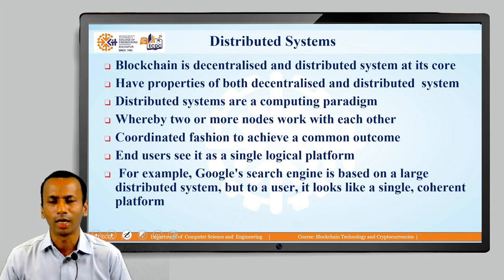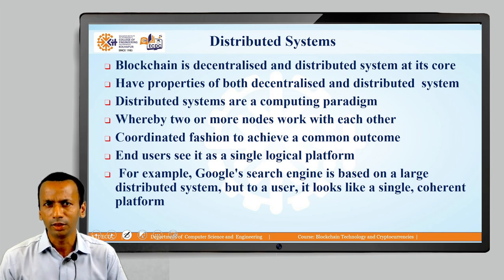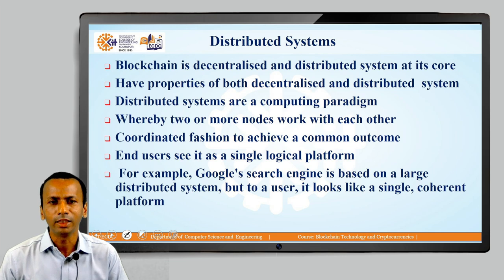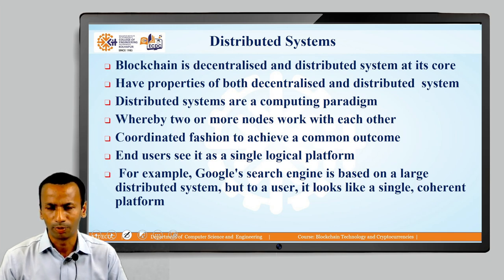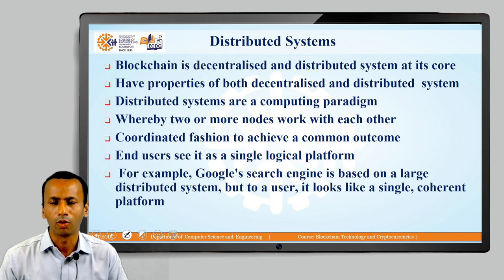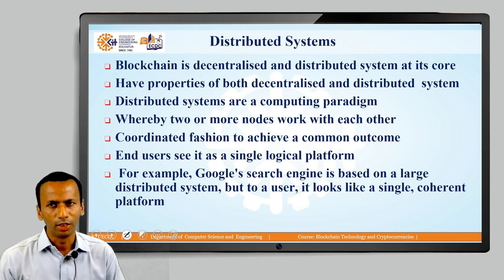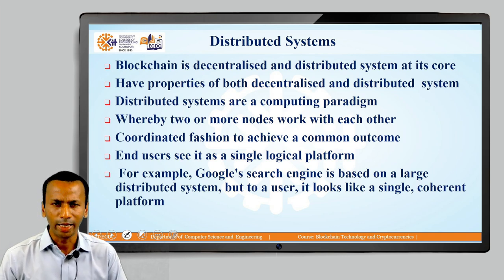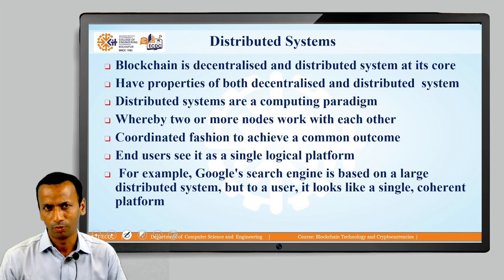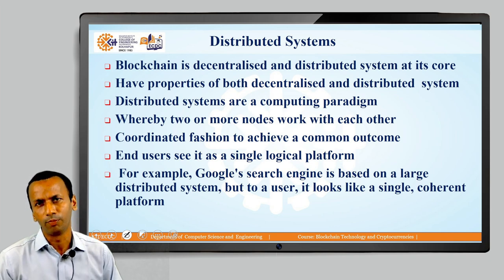For example, the Google search engine is based upon a very large distributed system. But as an end user, whenever we search for any resource or information from Google, we see it as a single coherent system. Behind the scenes, multiple nodes come together, perform certain processing on the data, and the collective result is displayed to the user. Because of that, we see only a single logical platform which is Google, but which is actually a distributed system. Like Google, there are a number of distributed systems available in the market.